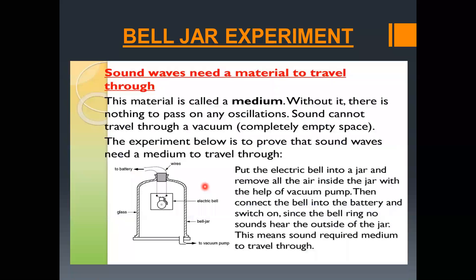Sound waves need a material to travel through — remember this. Sounds can only move when there is a material to move through, and this material is called a medium. The material which sound waves need to travel through is called a medium. Without it, there is nothing to pass on any oscillations. Oscillation is another term used for vibrations — it can also refer to compressions and rarefactions, or the backward and forward movement of sound.